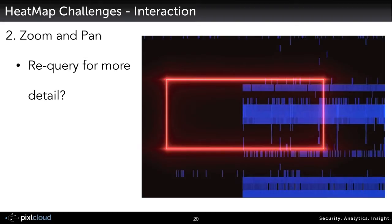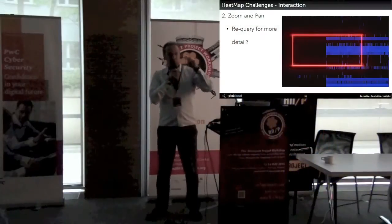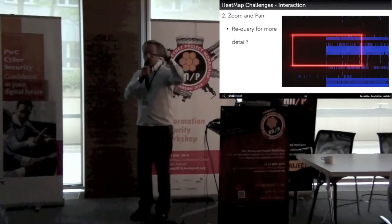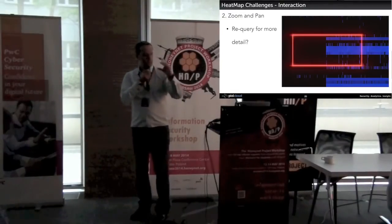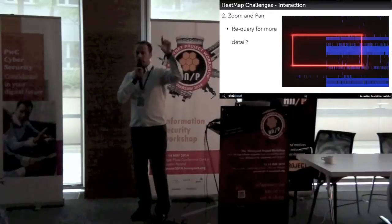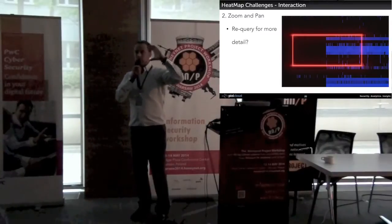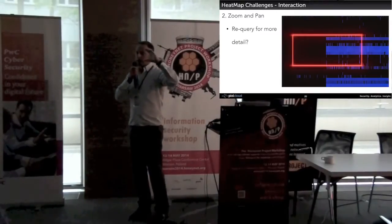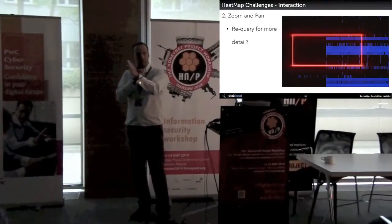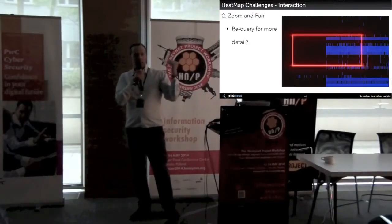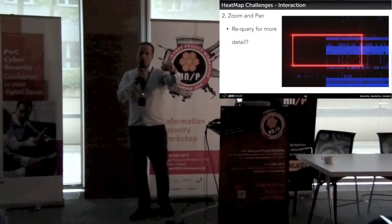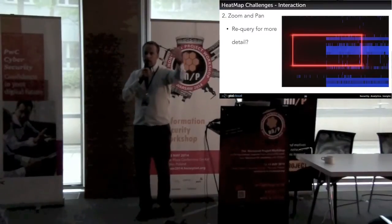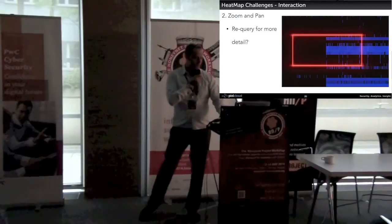Then if you zoom in — shown here by the red rectangle — I zoom into a certain area. If you go to a certain detail level, your individual blocks become really big. At some point, I might want to re-query the backend because I may have more detailed data available that was aggregated before. So do I go and re-query to get actually more detail? And how do I do that exactly?